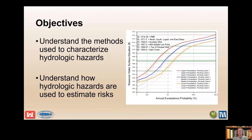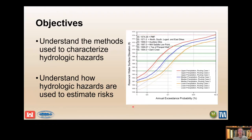We'll focus on two objectives: hydrologic hazard methods and how they're used. The figure shows a hydrologic hazard curve — in this case, a reservoir stage frequency curve for Altus Dam in western Oklahoma. Here we show maximum reservoir water surface on the y-axis and annual exceedance probability on the x-axis. We'll use these to describe how hydrologic hazards are used to estimate risks.